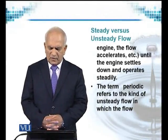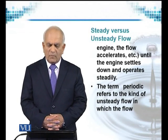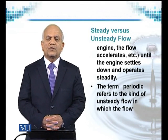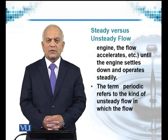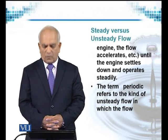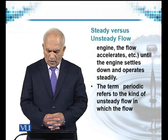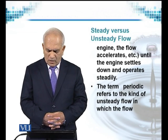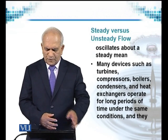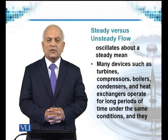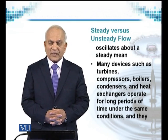When a rocket engine is fired, the flow accelerates, develops after a while, and settles down to a smooth cruising speed. This is seen in a number of flows — the flow develops after a while. Such flows are called transient flows. The term periodic refers to the kind of unsteady flow in which the flow is oscillating between the mean point, or what we call a steady mean.